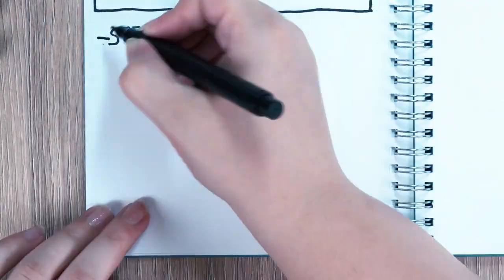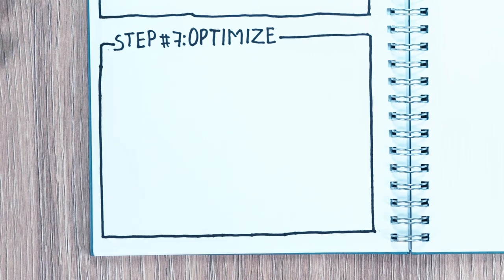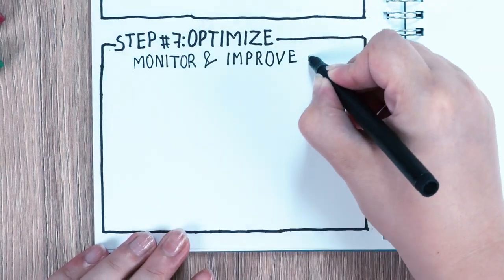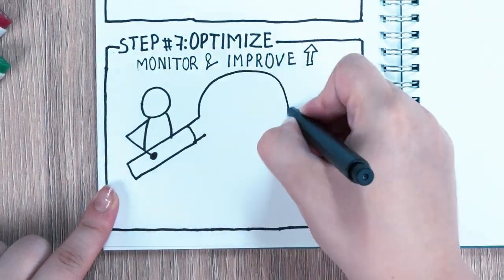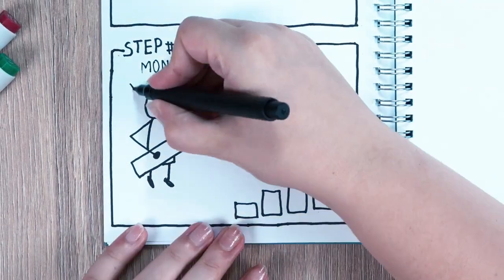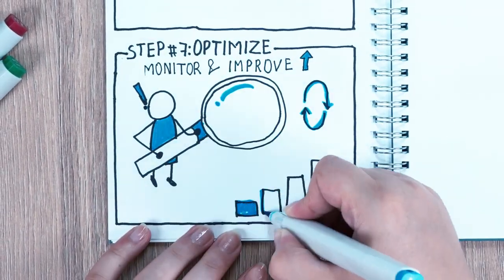Lastly, step number seven is optimization, and it starts by monitoring the output of your current systems through carefully chosen metrics. In this way, the foundation can be laid and systems can be progressively refined over time.